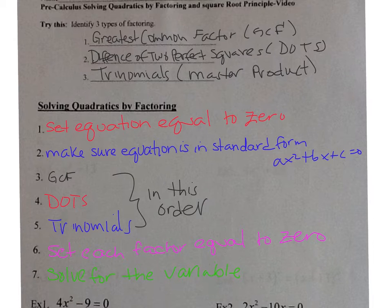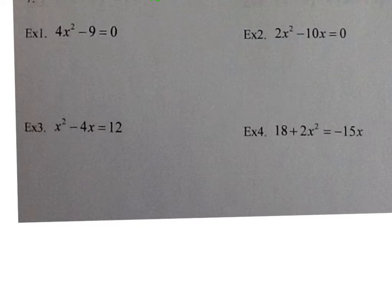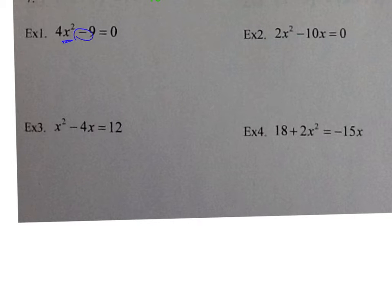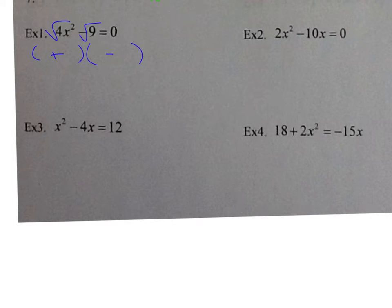Let's take a look at the first problem. Number one, we have 4x squared minus 9. The first thing we look for is the greatest common factor. I have a 4 and a 9 — there's no number that goes into both. I have x squared but there's no x over here, so I can't factor that out. The next thing is to look for DOTS. I notice 4 and 9 are perfect squares, x squared is a perfect square, it is a difference, and I only have two terms. So it is the difference of two perfect squares. I set up two parentheses, put a plus and minus in each one, and take the square root of both terms. The square root of 4x squared is 2x, and the square root of 9 is 3. Make sure it's still set equal to zero.